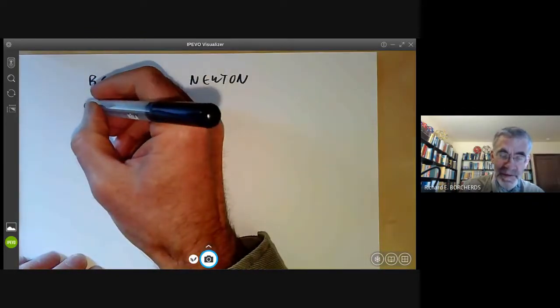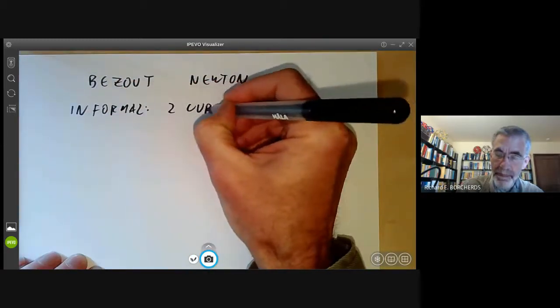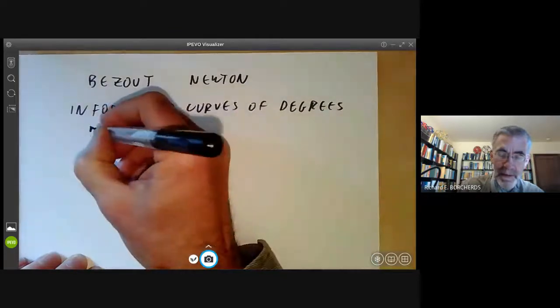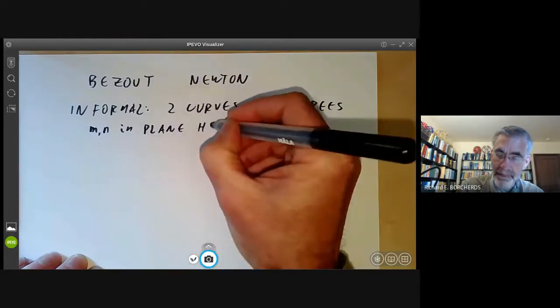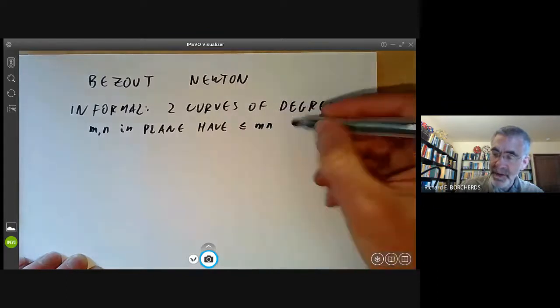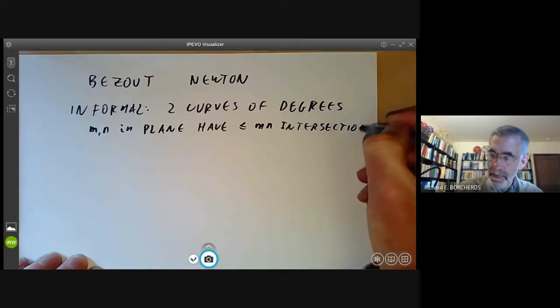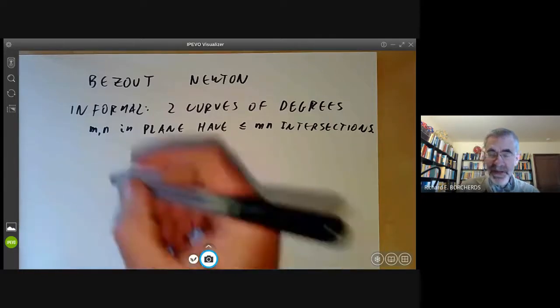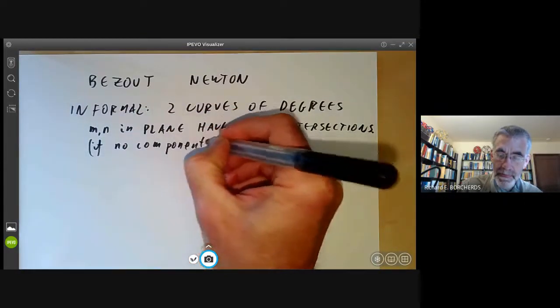So what does Bezout's theorem say? Well, it says, roughly speaking, two curves of degrees m and n in the plane have at most mn points of intersection. Well, that's not quite true because the two curves of degrees m and n might have an entire component in common, for instance. They might even be the same, so it should say if there are no components in common.